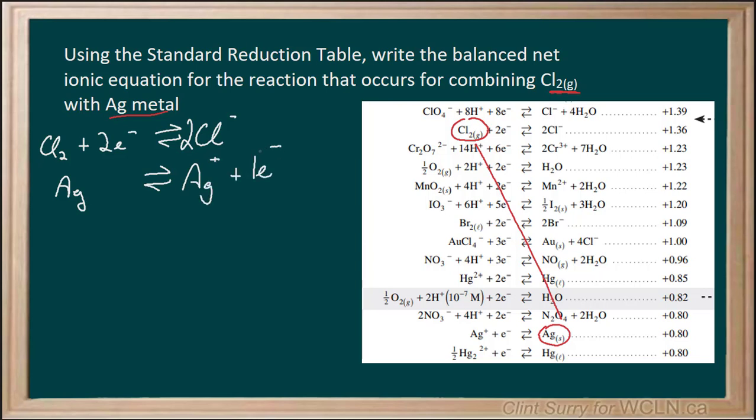Now in order to balance this, I can see all my species, but I need to make sure those electrons balance out. There are two in the chlorine reaction, only one in the silver. So I need to multiply all of these parts there by two.